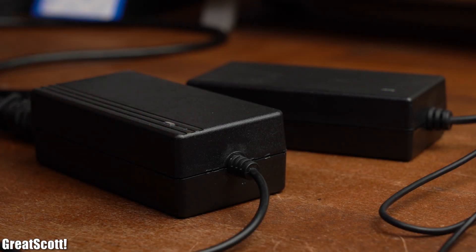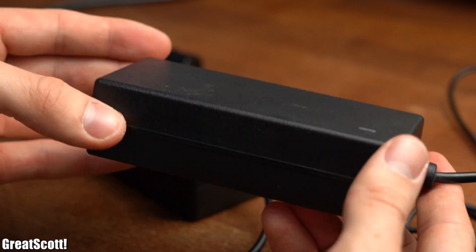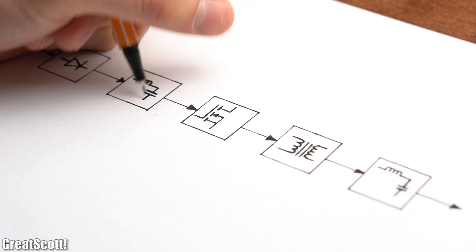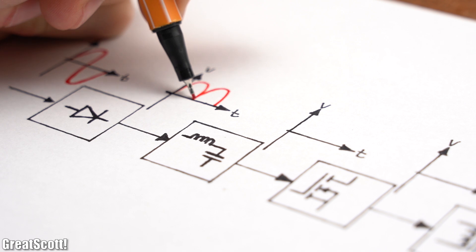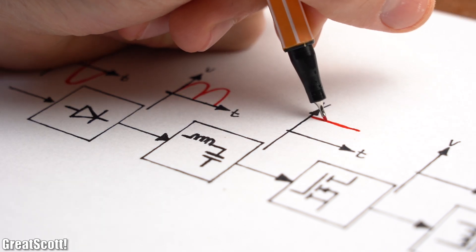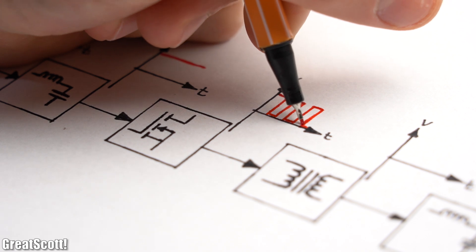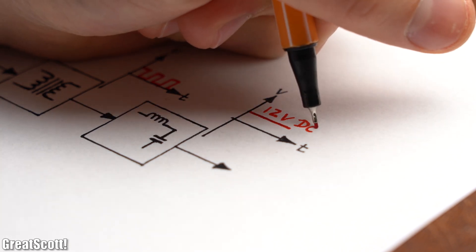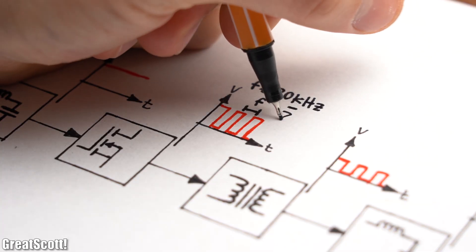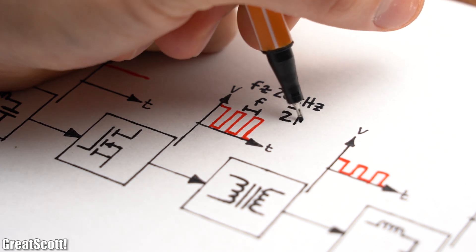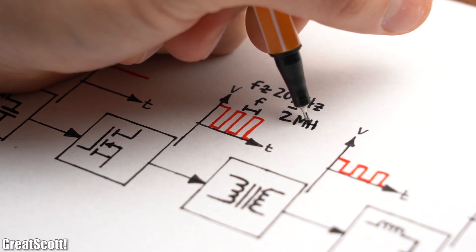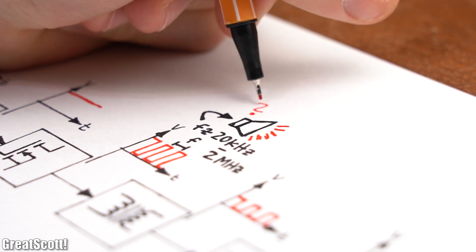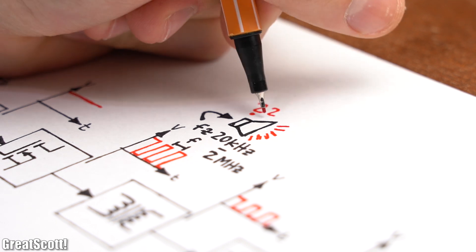First off we have to find out how our switched mode power supply creates interferences. Looking at the simplified functional principle: the mains voltage gets rectified and smoothed out, afterwards chopped up through transistors, lowered by a transformer, and at the end once again rectified and smoothed out to create a low constant DC voltage. The control electronics use a rather high frequency compared to the mains voltage frequency in order to chop up the DC input voltage. Therefore the created harmonic frequencies could be responsible for the hearable interference noises.